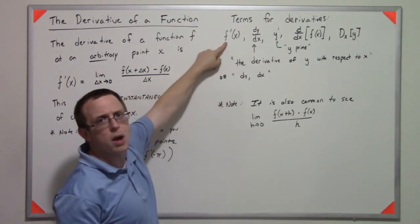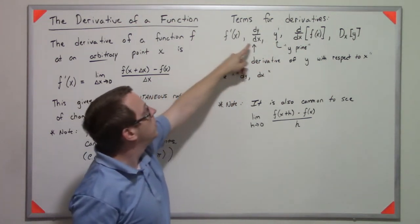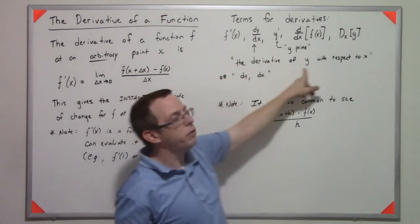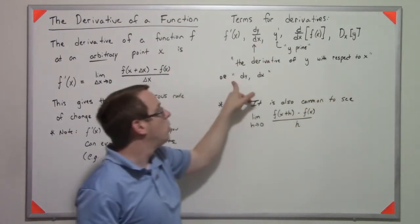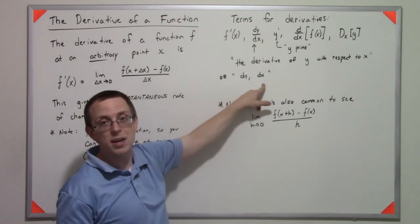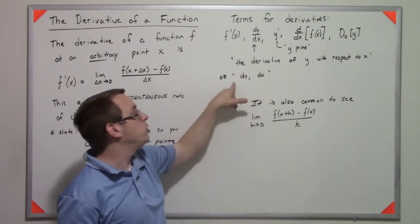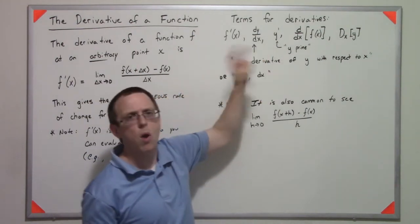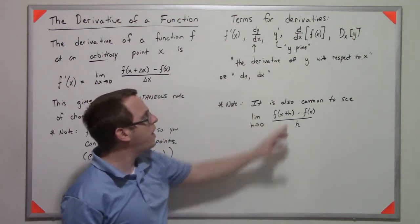And this is f prime at x. This one is either derivative of y with respect to x, or a lot of people will just say dy dx. That's really fast. You say dy dx. Or you might say f prime. Or you might say y prime. Those are fast.